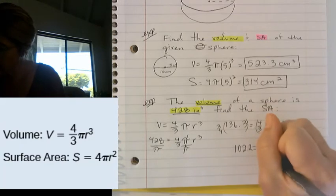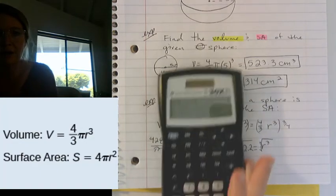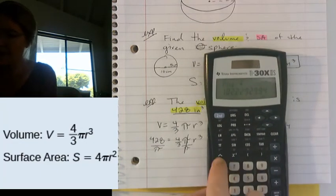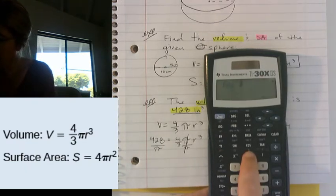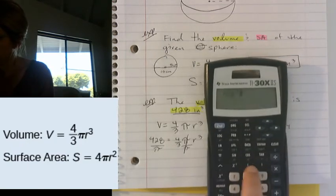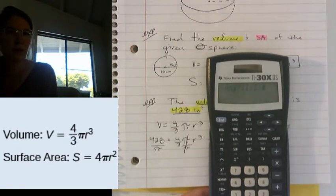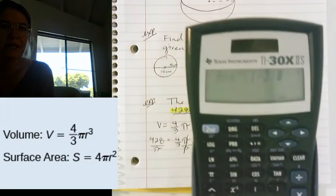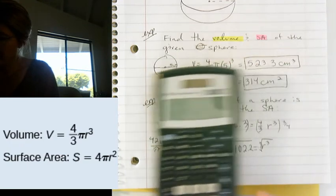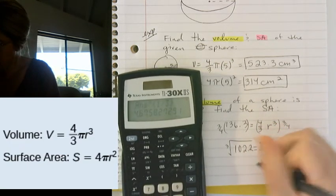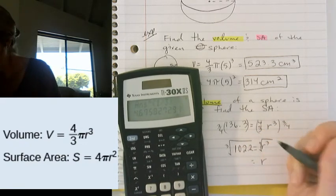So let's take the cubed root. So to do that on your calculator, you're going to raise with a little carat. So I've got 102.2 raise. And then in parentheses, I'm going to say to the 1 divided by 3 power. So the cubed root is the same thing as raising something to the 1/3 power. Alright, and that gives me a radius of 4.6.